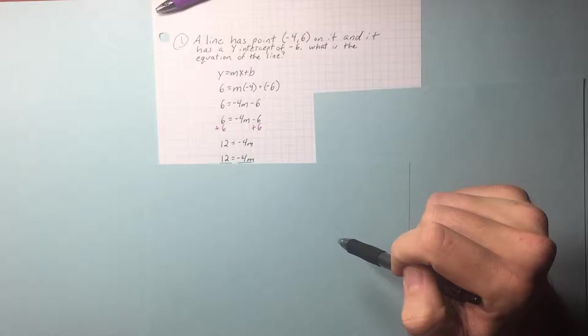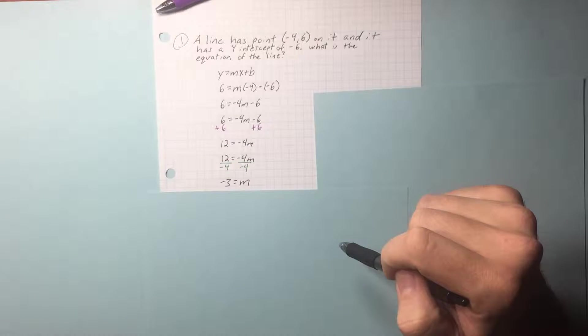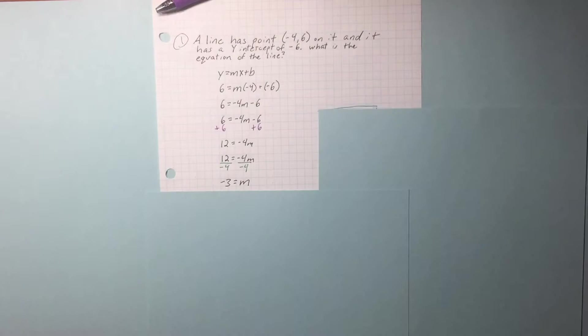12 equals negative 4m. Divide by negative 4, m equals negative 3. So now we have our slope, and we plug in our slope.